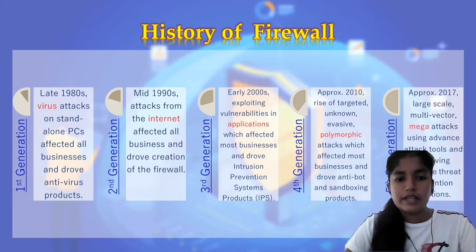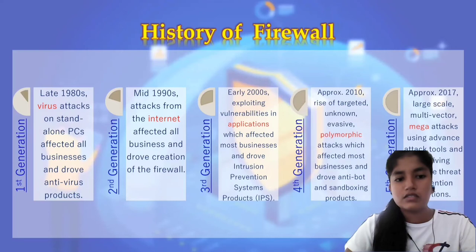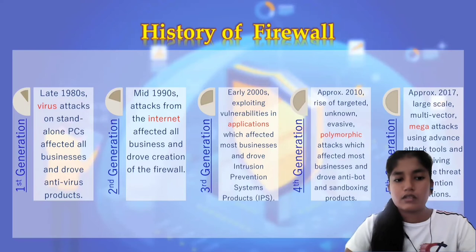Generation 4 is from 2008 to 2015. Around 2010, the rise of targeted, unknown, evasive polymorphic attacks drove anti-bot and sandboxing products. In 2009, Gartner went on to define the concept of next-generation firewall. Generation 5 is from 2015 onwards. Around 2017, large-scale multi-vector mega attacks drove advanced threat prevention solutions. The technologies behind firewall solutions have changed greatly, driven by the convergence of information to the electronic world and the internet.